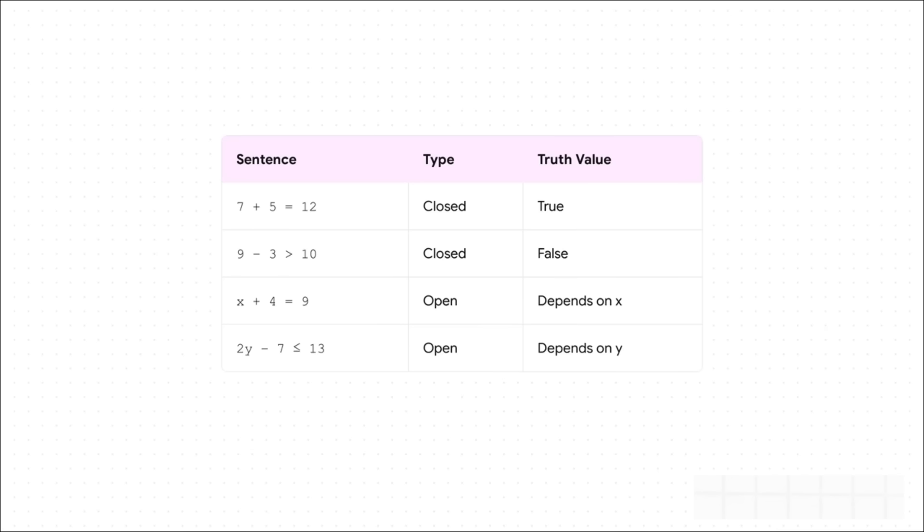Now things get interesting. X plus four equals nine. This is an open sentence. Why? Because its truth totally depends on what x is. It's only true if x is five. Same idea for two y minus seven is less than or equal to 13. That's another open sentence and it's true, but only for certain values of y.